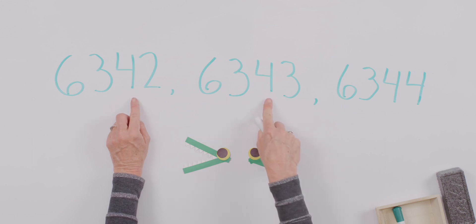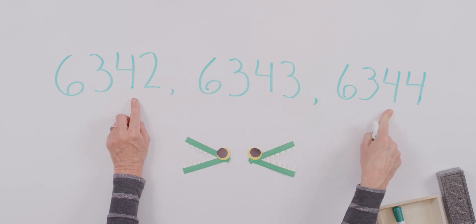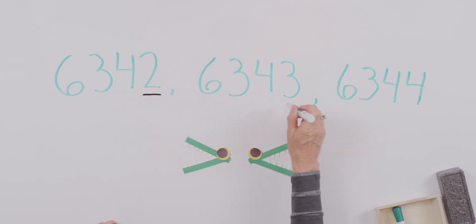Okay, so let's look in the tens column. Still the same. We have to drop down to the ones column for this one to determine which number is the greater number. Can you see now which one is the greater number? 6,344 is greater than 6,343 and 6,342. Wow, you're getting pretty good at this.